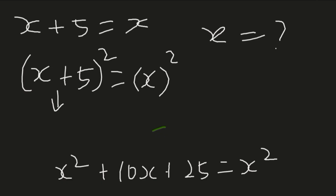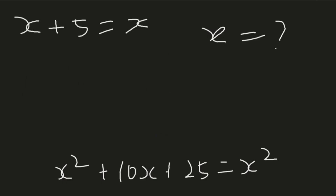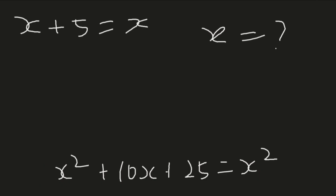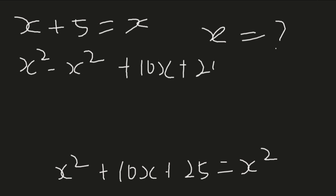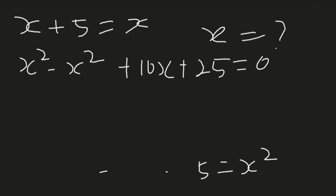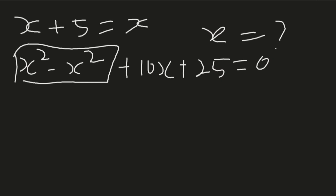Now from here we can go ahead and simplify. We have x² on this side and also x² on the other side, so I can bring them to one side: x² minus x² plus 10x plus 25 equals 0. This simplifies because x² minus x² is 0, leaving us with 10x plus 25 equals 0.